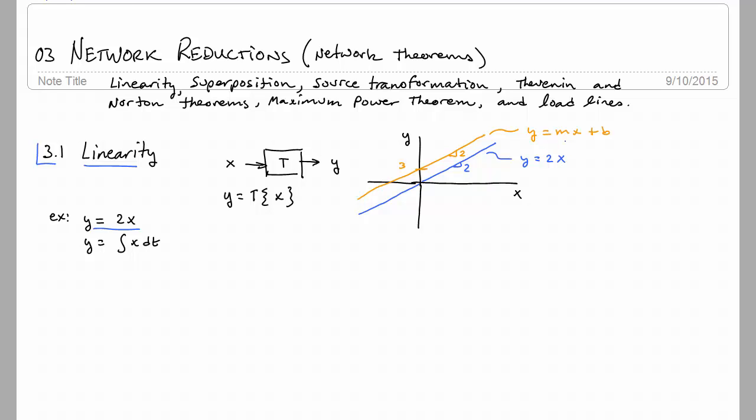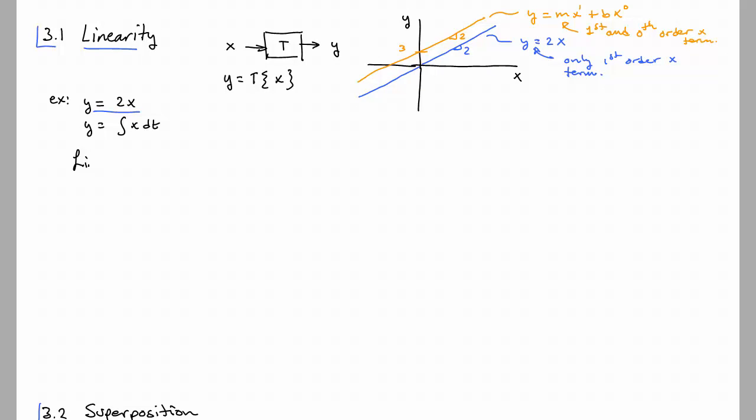One thing to point out here is that, before I go on to the formal definition, this term here, or this line, this blue one, has only first order X term. Whereas this guy has first and zeroth order X. We may not think of it that way, but this really is X to the zero, is it not? And we're going to see that a system is linear only if it has X to the first terms. Any other terms, any other powers of X will render the system nonlinear. So let's define what we mean by linearity.